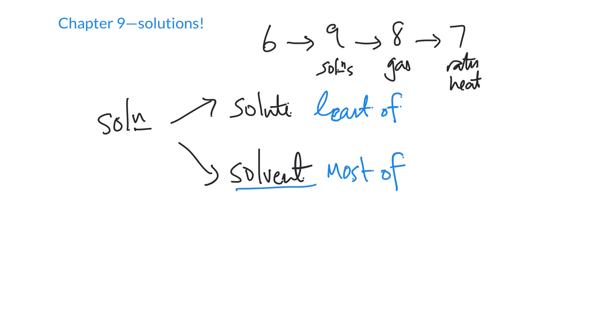So some examples of solutions are things like seawater. And so seawater is a solution, and the thing we've got the most of is water. I guess that's why we call it seawater, so water is the solvent. And what else is dissolved in there? Well, we've got things like salt, and there's lots of different types of ionic compounds here that we all call salt, but salt would be the solute.